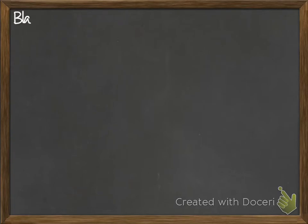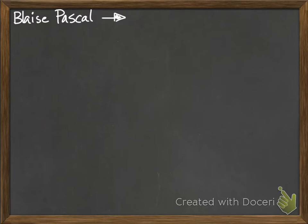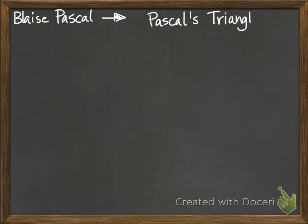There was this guy way back in France in the 1600s named Blaise Pascal. He was famous for a lot of things — he was a mathematician, physicist, philosopher, inventor, and writer. One of the things he did was come up with a geometric pattern called Pascal's Triangle, which is specifically useful for probability. It's a neat way of figuring things out without drawing a bunch of tree diagrams.